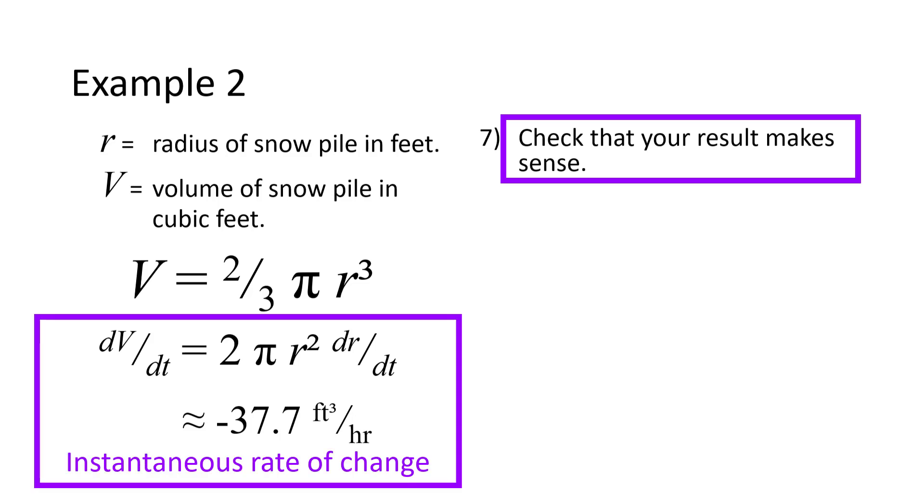We have found the instantaneous rate of change of volume at the moment when the radius is 6 feet. Later, with a smaller radius, the volume will change more slowly. The instantaneous rate of change that we found is not the same as the average rate of change over a period of an hour, but it is likely to be close.